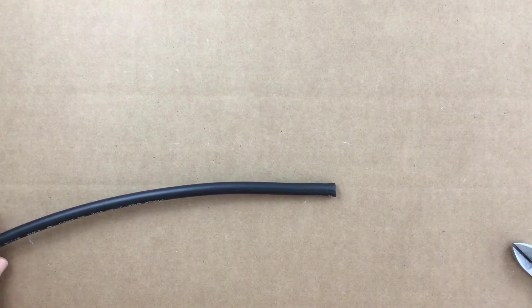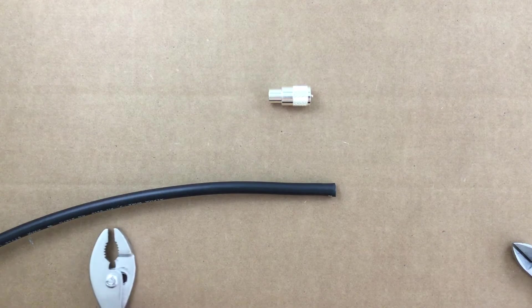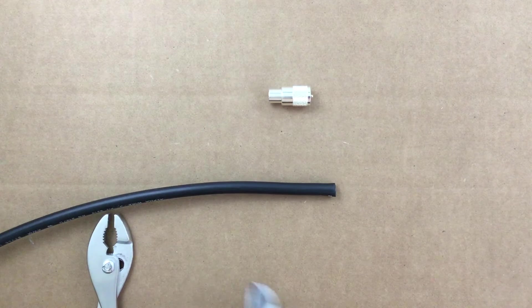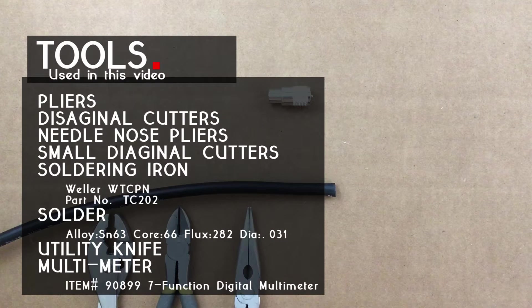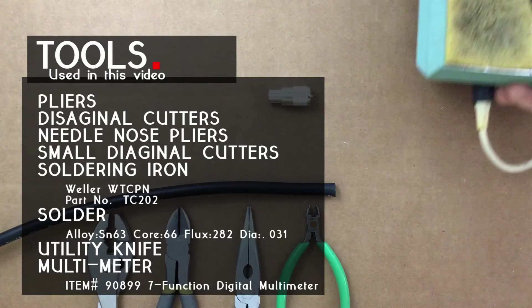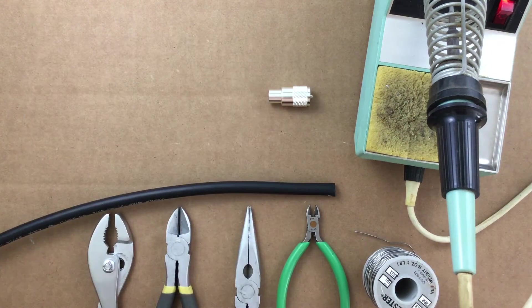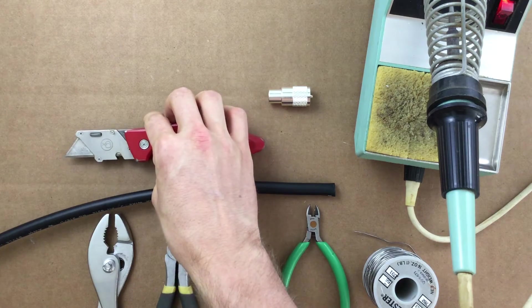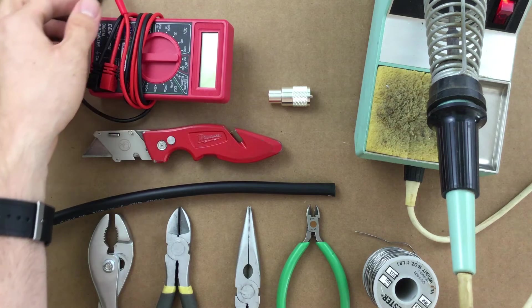Welcome to another Max Gain Systems installation series video. We will be installing a PL259 connector onto RG214 coax. This coax has a double braid that does not allow for most PL259 connectors to be installed due to its slightly larger diameter. The Max Gain Systems PL259 can be easily installed with little adjustments made to the standard stripping dimensions. Now let's get started with our installation.